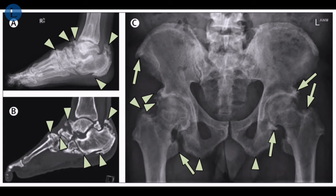As depicted in our clinical picture, imaging of the feet and pelvis demonstrated extensive irregular bony proliferation of the entheses, particularly with calcaneal, talar, navicular, acetabular, and enthesophytes.